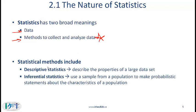When we talk about statistical methods, there are two subcategories. Descriptive statistics essentially describe the properties of a large data set — the mean or average return of 700 stocks in a given stock market, for example, would be a descriptive statistic. This reading is going to focus on descriptive statistics.